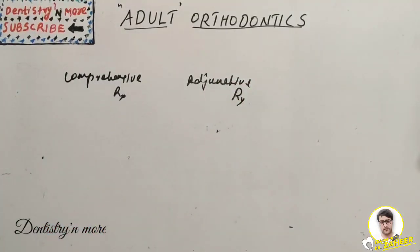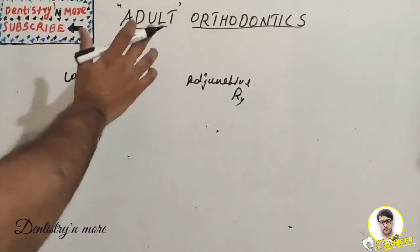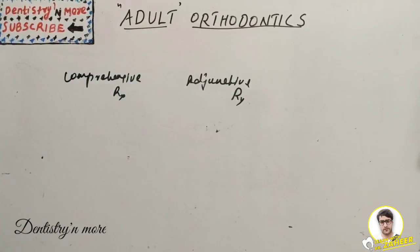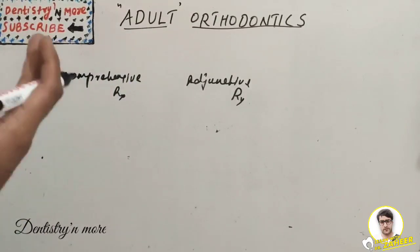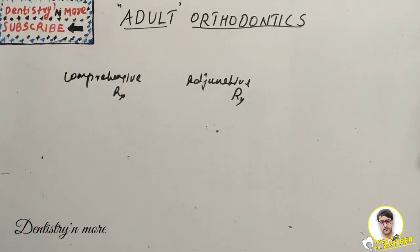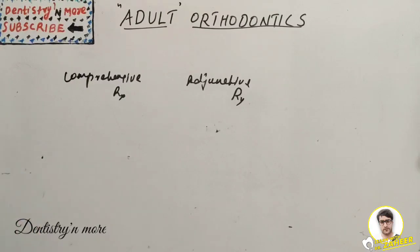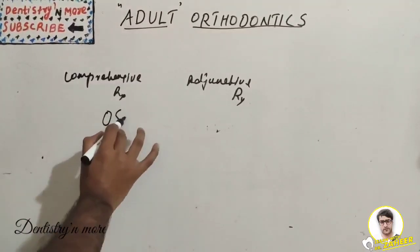Adult patients seek orthodontic treatment to improve dental appearance, to treat relapse cases where a patient had orthodontic treatment earlier and relapse occurred, to facilitate restorative or periodontal treatment, for surgical correction of jaw discrepancies, and to use intraoral mandibular advancement appliances for obstructive sleep apnea (OSA).